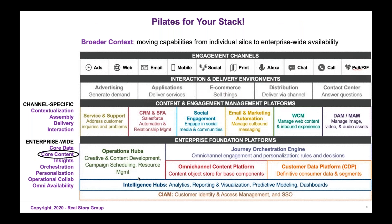We sometimes describe this as Pilates for your stack — working on your base rather than your abs. You still have some channel-specific services on the left, like contextualization, assembly, delivery, and interaction. But then you have some enterprise-wide services as well: core customer data, core content — not all of your content but your core content — insights, orchestration, personalization, collaboration, and omnichannel availability. That's all happening ideally at an enterprise level. To be sure, this is a target or aspirational reference architecture. We don't know of any of even our most advanced subscribers who have this today, but nearly all of Real Story Group's enterprise subscribers are working towards some semblance of this right now.